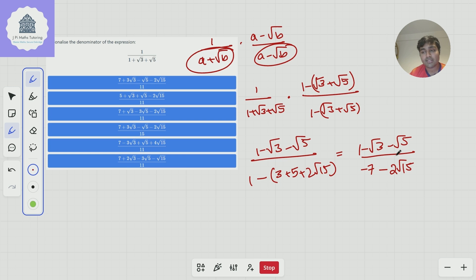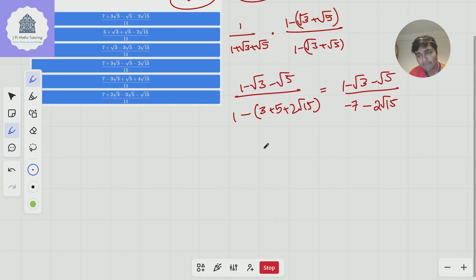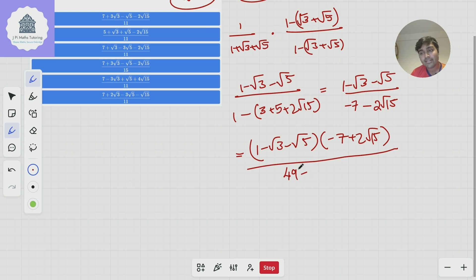Now the natural thing to do is multiply top and bottom by minus 7 plus 2 root 15 in order to rationalize this, so that's going to equal 1 minus root 3 minus root 5 times minus 7 plus 2 root 15. Now what do I get on the denominator? Well I'm going to get 7 squared so 49 minus 2 root 15 squared which is going to be 4 times 15 which is 60.